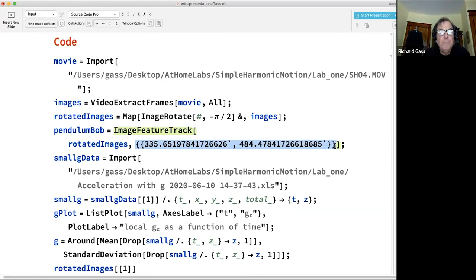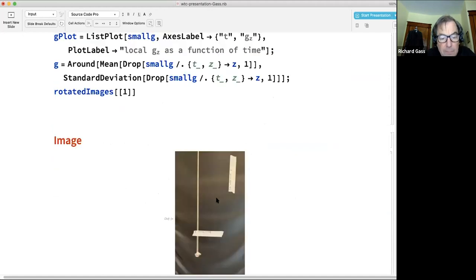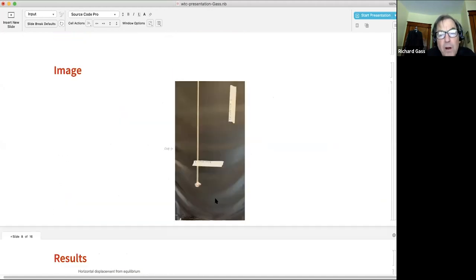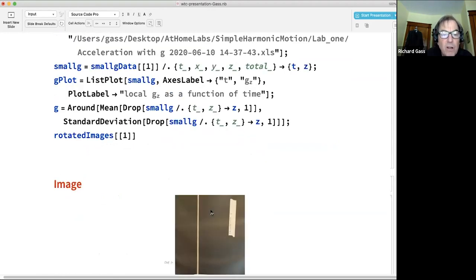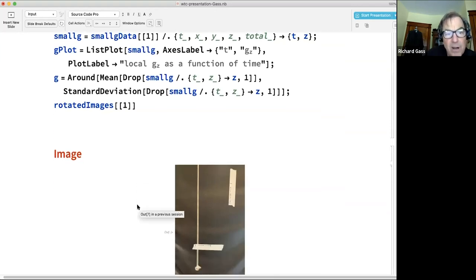For this lab, they also need to measure the local acceleration of gravity. They do that using their phone and the phyphox app, which allows them to export that acceleration as a .XLS file, which they then import into Mathematica. One thing we hadn't anticipated was that some students had dropped their phone so often that their sensor no longer worked very well. So there were a couple students we had to ship data to for measuring small g.